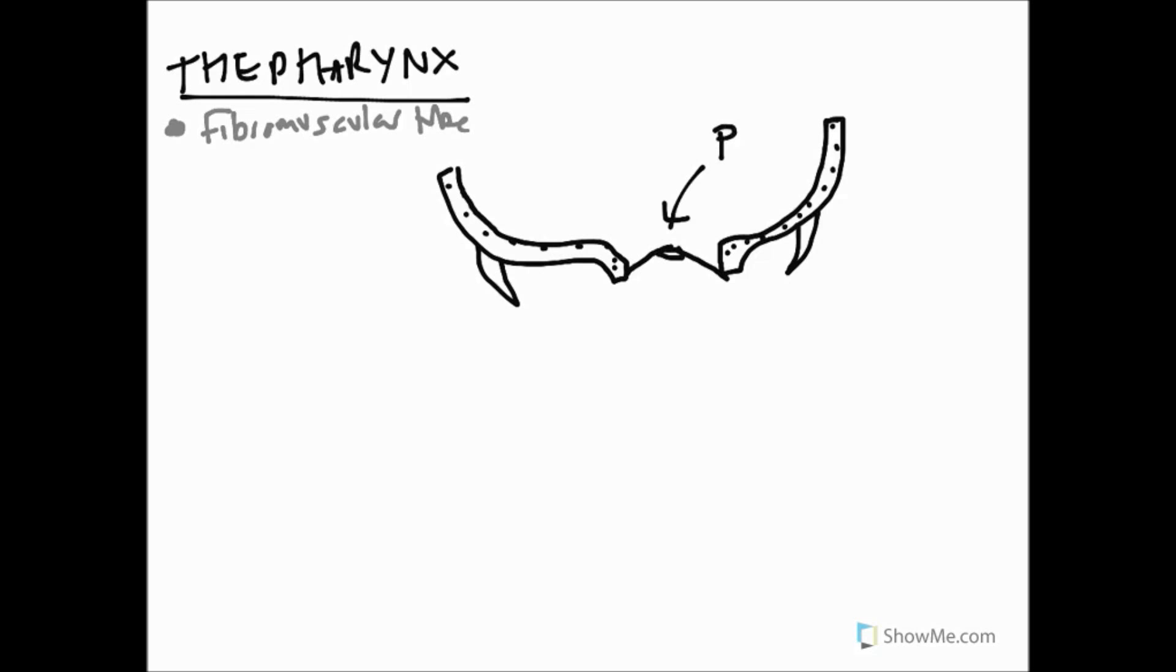This is something known as the pharyngeal tubercle and you may remember that I've pointed this out on a skull before. The pharyngeal tubercle is just anterior to foramen magnum and there's an important attachment site for what we call the superior constrictor.